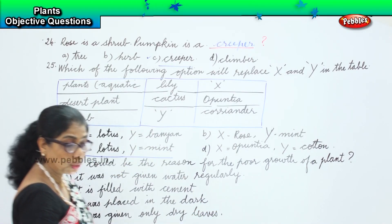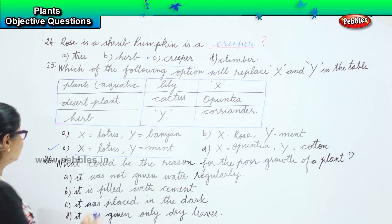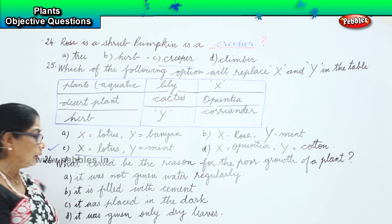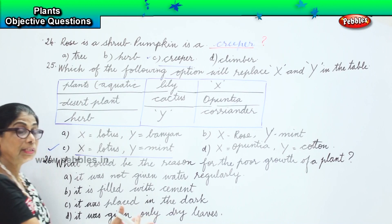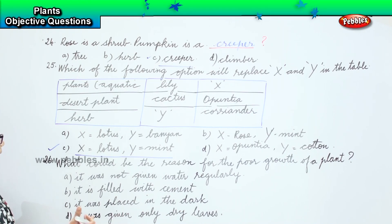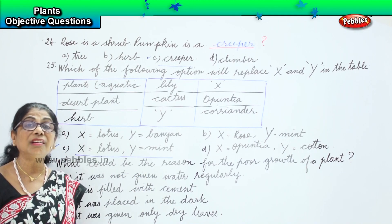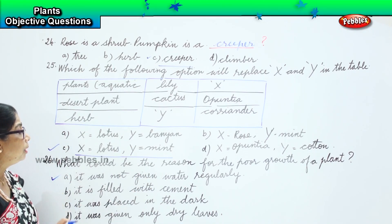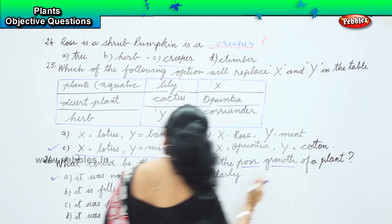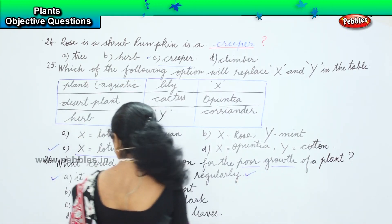What is the reason for the poor growth of a plant? What does the plant need? It needs sunlight and it needs water. It was placed in the dark — no sunlight. It is filled with cement instead of water or sand. Option A says it was not given water regularly. The most important reason for the poor growth of a plant is it was not given water regularly.